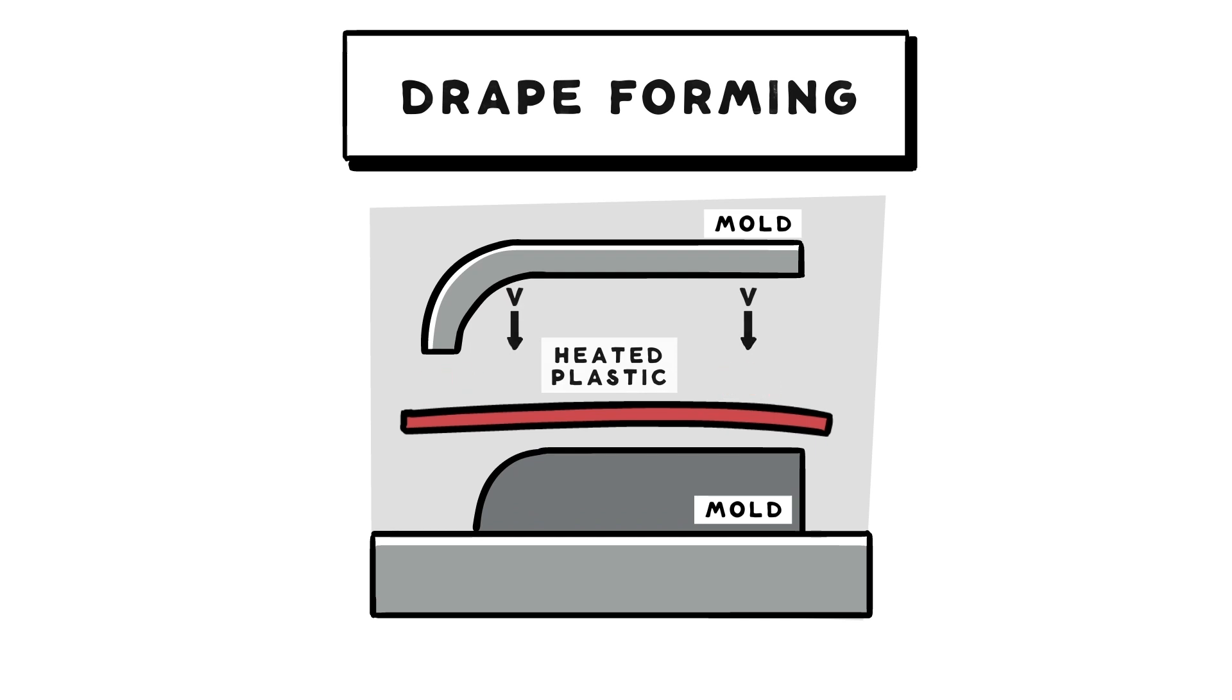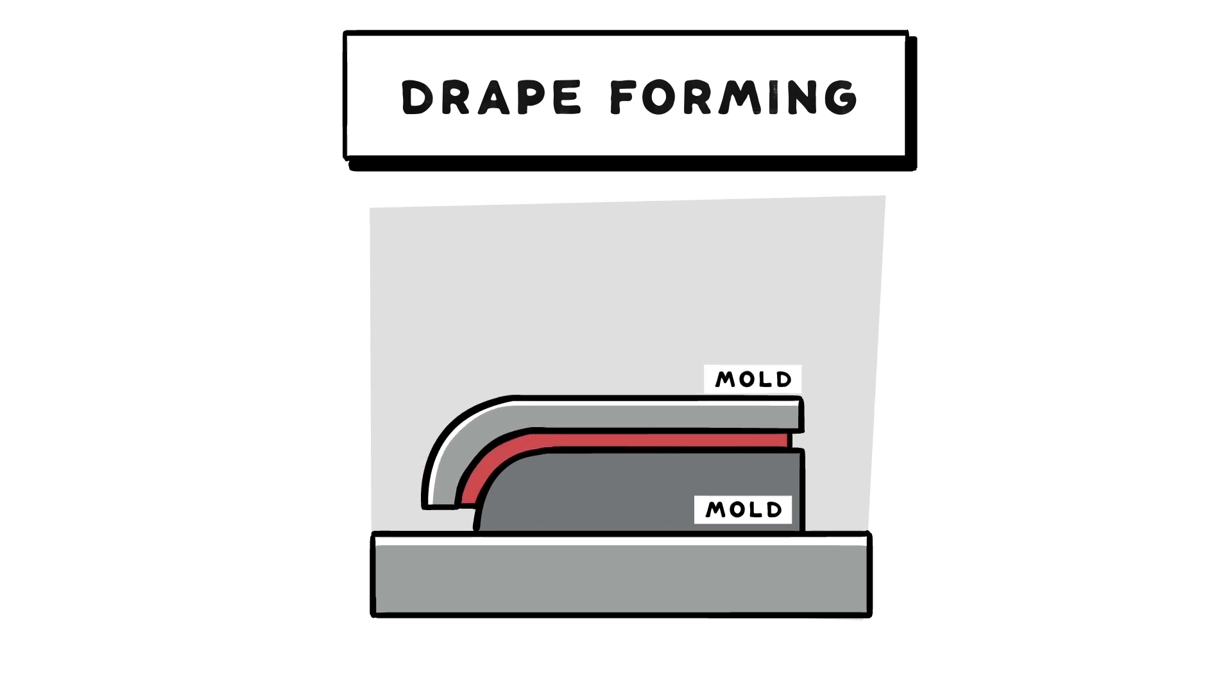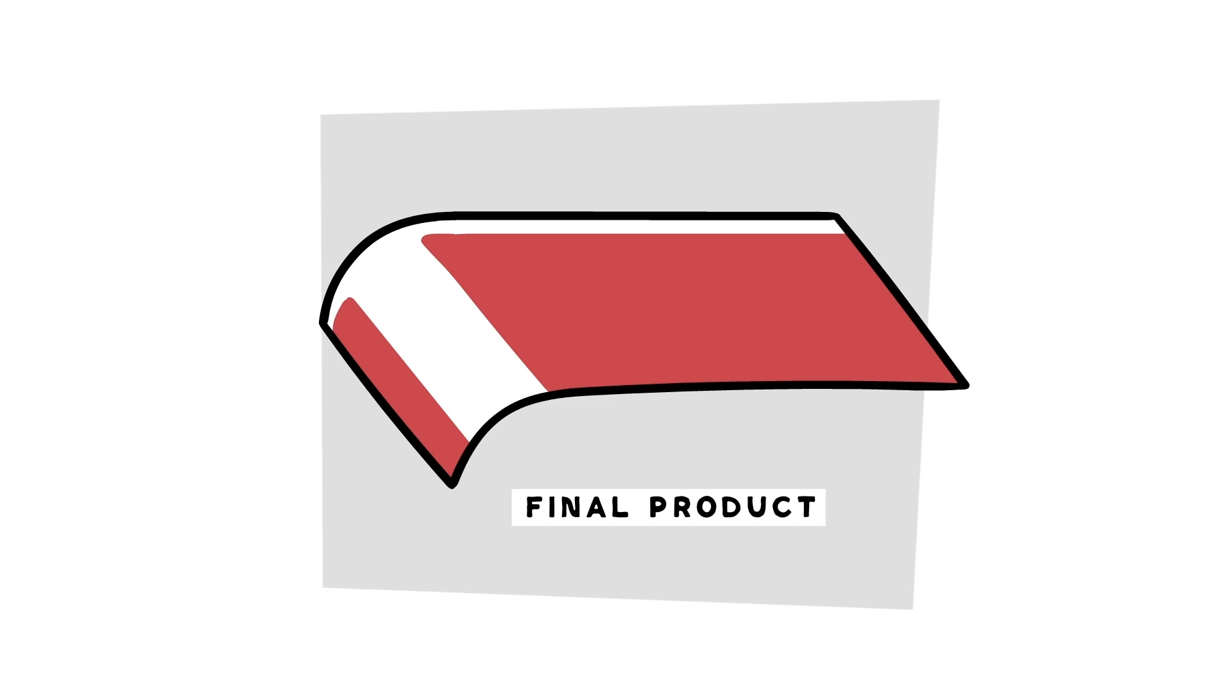Drape forming is used for simple 3D shapes without fine detail. The sheet is heated and hand formed by draping over a shape.